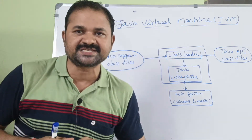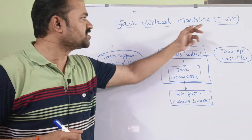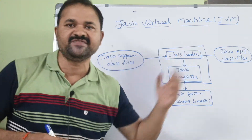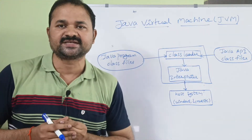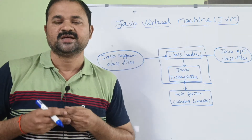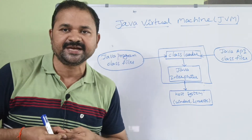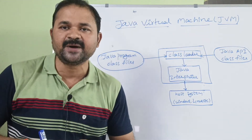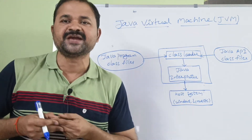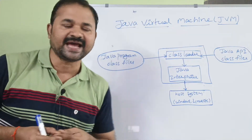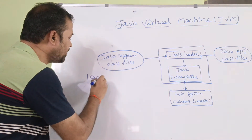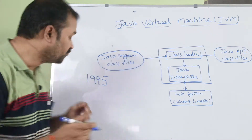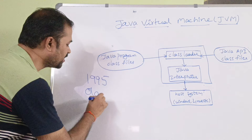Now, let us discuss about Java Virtual Machine — in short, we can call it JVM. We know that Java is the most popular object-oriented programming language, invented by Sun Microsystems in 1995. But currently, Oracle Corporation owns the Java programming language.